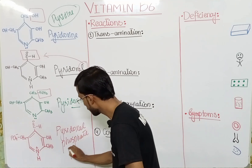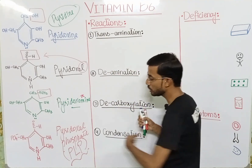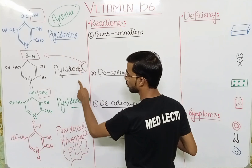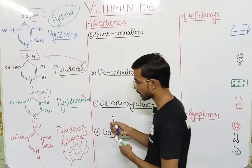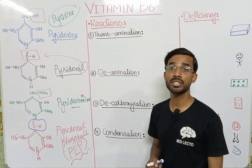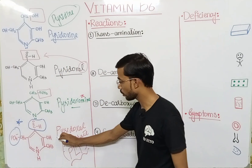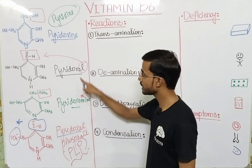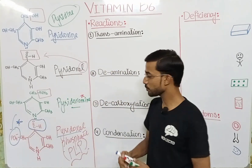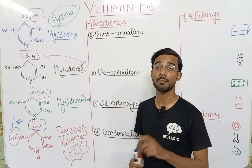Or you can say PLP. Pyridoxal phosphate is actually derived from Pyridoxine, Pyridoxal, and Pyridoxamine. If you see the structure, the aldehyde group will be the same, but you will see the addition of a phosphate group. That is why we call it Pyridoxal phosphate — it has the same structure as Pyridoxal but with the addition of a phosphate group. This is the active form of Vitamin B6.